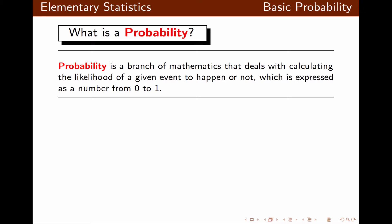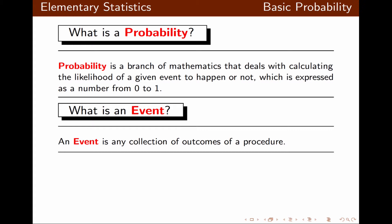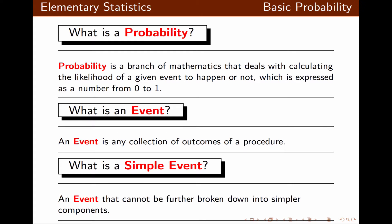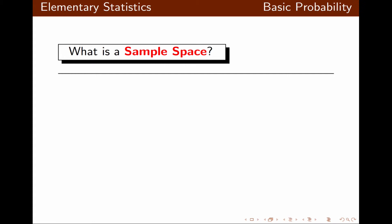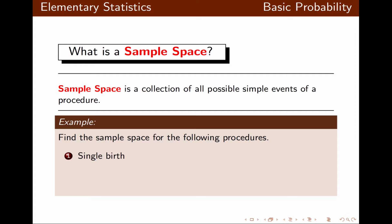What is an event? An event is any collection of outcomes of a procedure. What is a simple event? A simple event is an event that cannot be further broken down into simpler components. What about sample space? Sample space is a collection of all possible simple events of a procedure, which basically is a collection of all possible outcomes. Let's look at some examples.